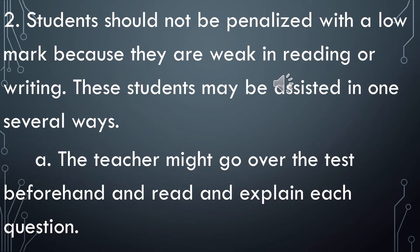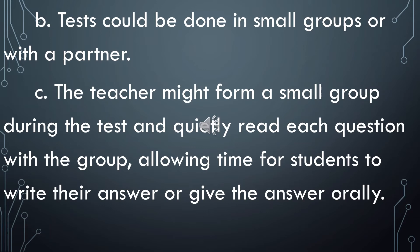Number two, students should not be penalized with a low mark because they are weak in reading or writing. The student may be assisted in several ways. First, the teacher might go over the test beforehand and read and explain each question. Second, the test could be done in small groups or with a partner — pairing bright students with those who need more help. Third, the teacher might form a small group during the test, quietly reading each question with the group and allowing students to write or give answers orally.